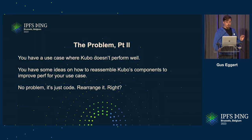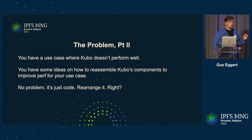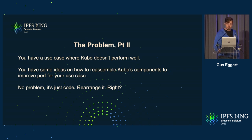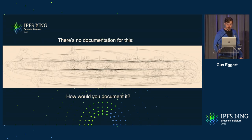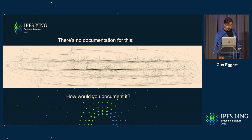That's just one scenario. Imagine — maybe some of you don't have to imagine very hard — there's a case where Kubo doesn't perform well for your use case. You want to reassemble some components to improve the performance. No problem, right? These are all the different components. You can just rearrange them. Well, there's also no documentation for any of this. You're just going to have to browse around on GitHub for a couple days and try to figure out what all this is and how you're going to reassemble it.